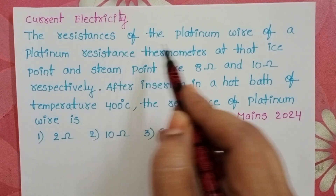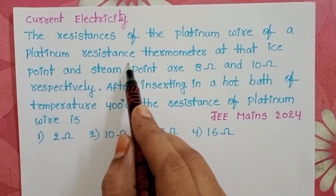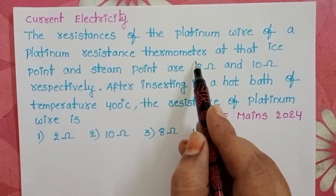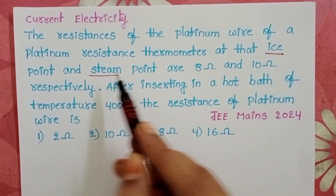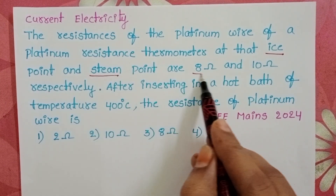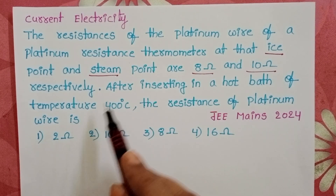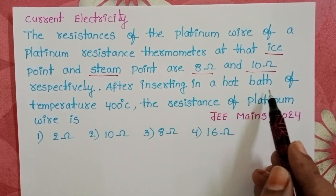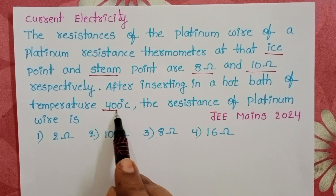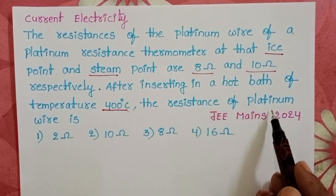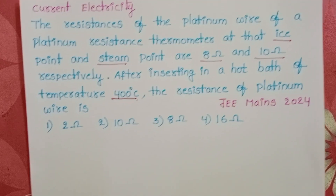The resistances of the platinum wire of a platinum resistance thermometer at ice point and steam point are 8 ohm and 10 ohm respectively. After inserting in a hot path of temperature 400 degree Celsius, the resistance of the platinum wire is to be found.